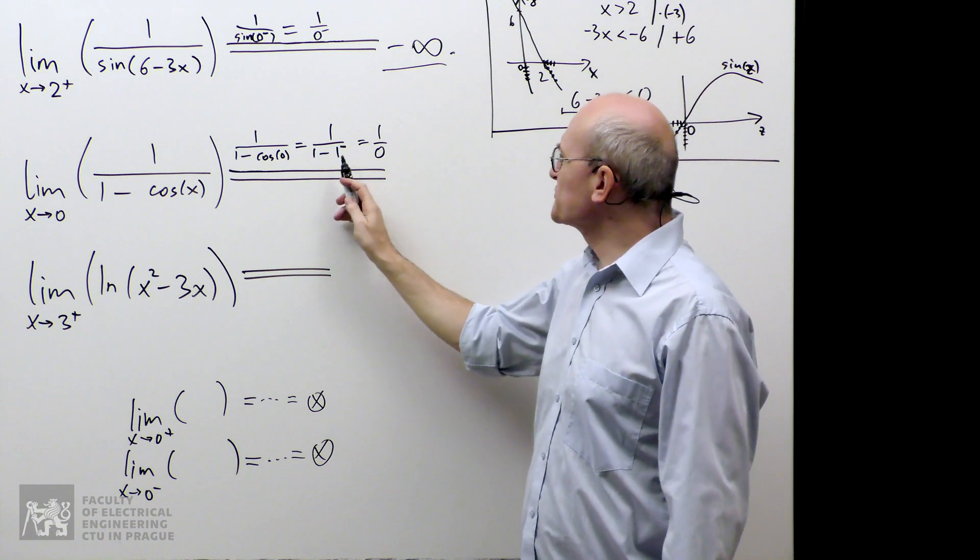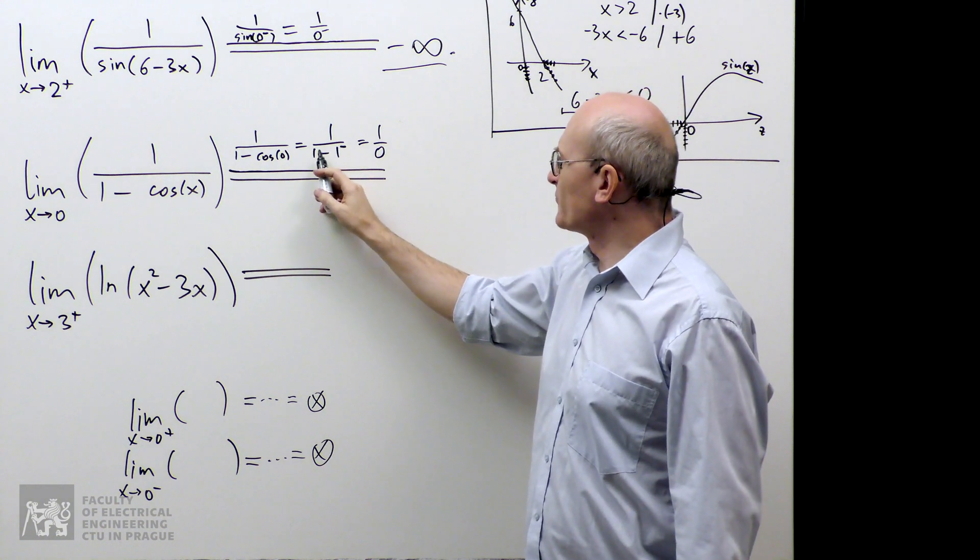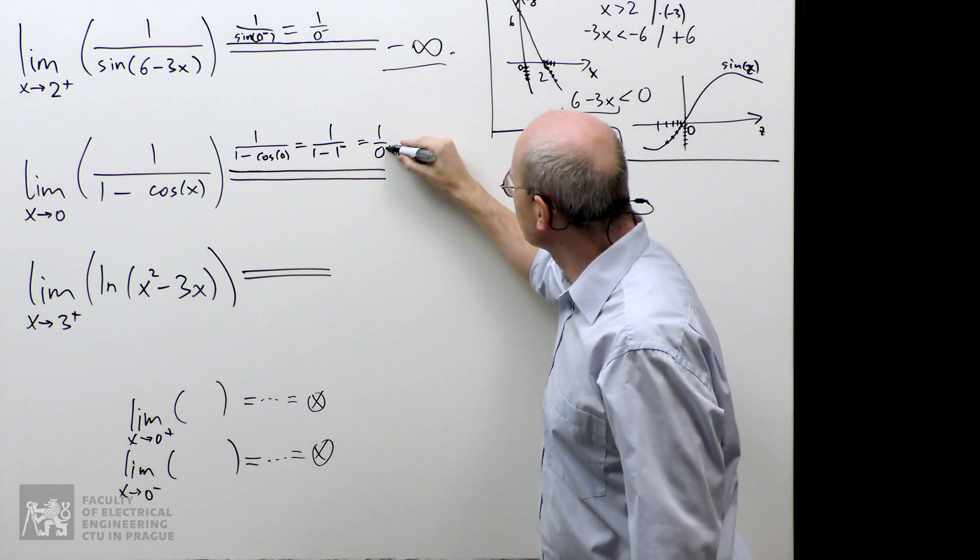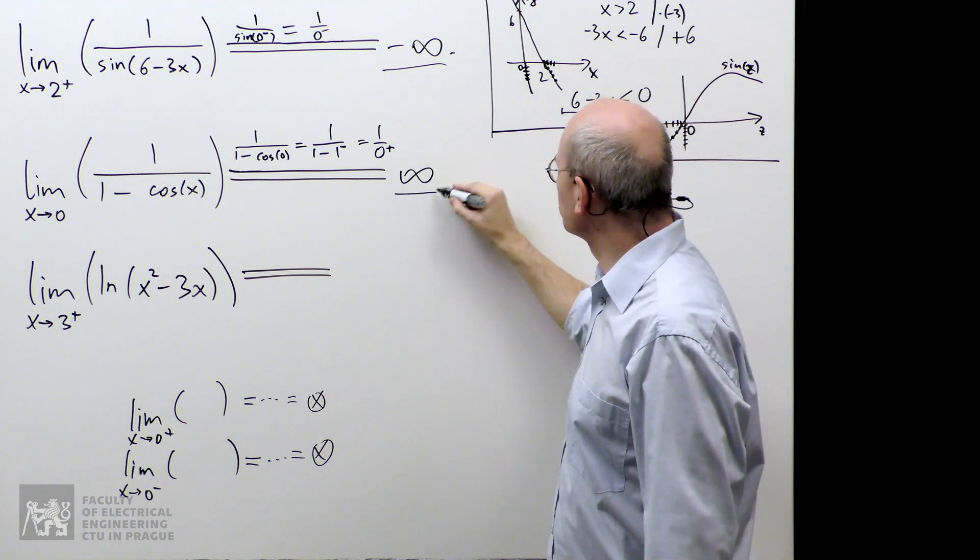So, it's a number which is almost 1, but a little bit smaller. And when I subtract it from 1, I get something small and positive. So, this is a positive 0 and the answer is infinity.